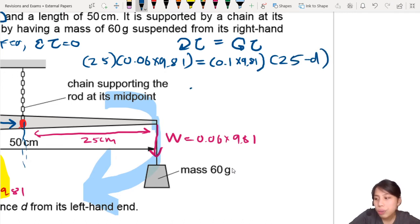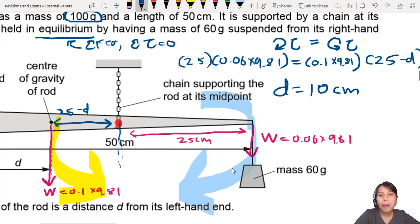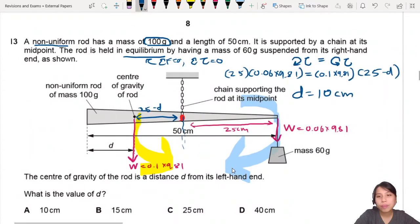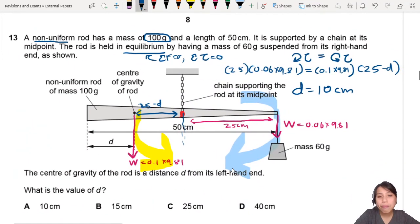Something like that. So if you calculate everything, you should get about 10 cm. I kind of skipped some steps so it wouldn't take too long. But this is how you can think of this. So 10 cm will be the distance d, which is not the distance with the pivot, but distance from the end of the rod.